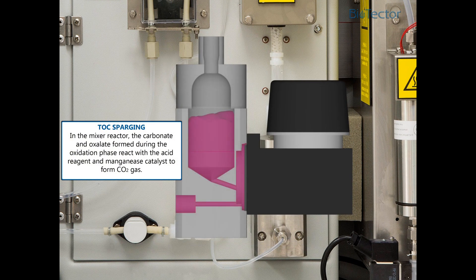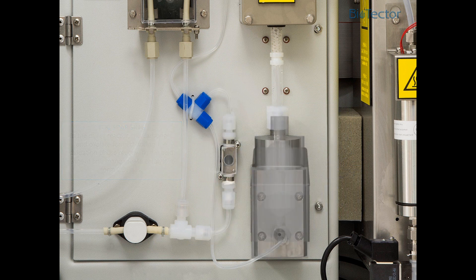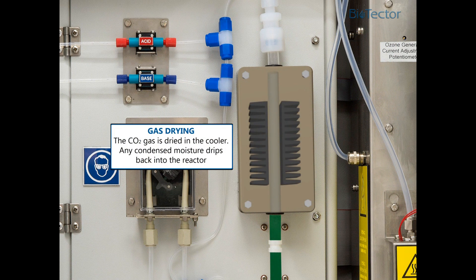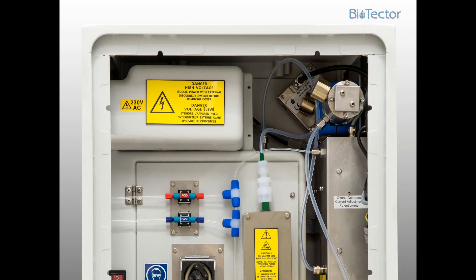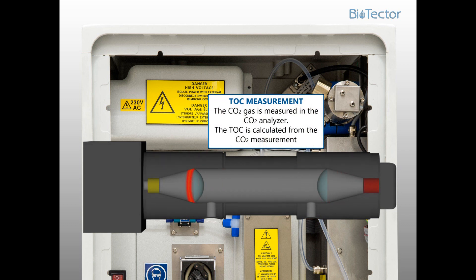In the mixer reactor, the carbonate and oxalate formed during the oxidation phase react with the acid reagent and the manganese catalyst to form CO2 gas. The CO2 gas is dried in the cooler. Any condensed moisture drips back into the reactor. The CO2 gas is measured in the CO2 analyser. The TOC is calculated from the CO2 measurement.